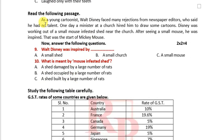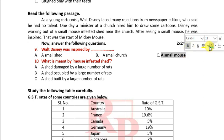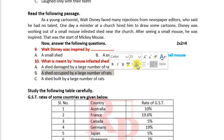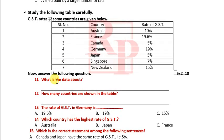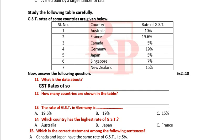The next one is from Reading B, Unit One. As a young cartoonist, Walt Disney was inspired by a small mouse. What is meant by 'mouse-infested shed'? A shed occupied by a large number of rats. Study the following table carefully — the table has been given on GST rates of some countries.